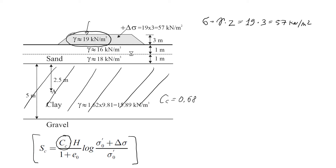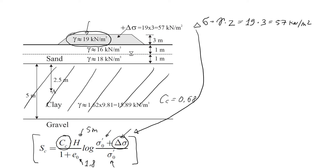H stands for the thickness of the clay layer, which is given as 5 meters. We also need the initial void ratio of the clay before we build the embankment, which was given as 1.8 — a very large void ratio. We also need the initial effective stress and delta sigma. Delta sigma is the additional stress from the embankment weight, which we already found to be 57 kN/m².